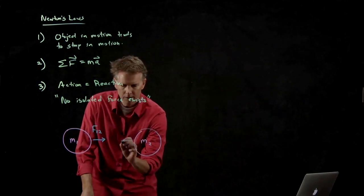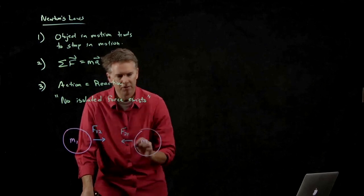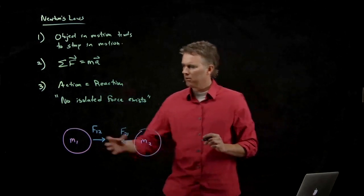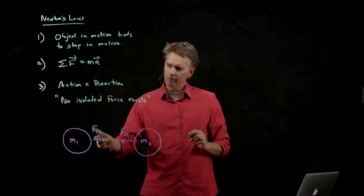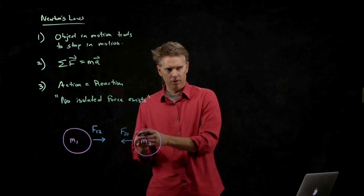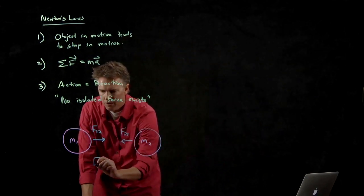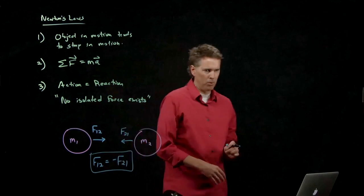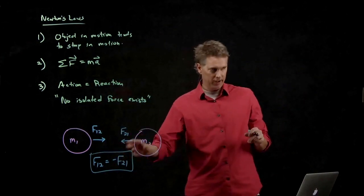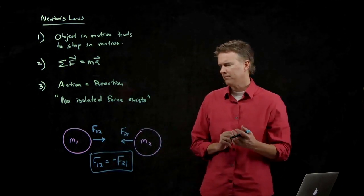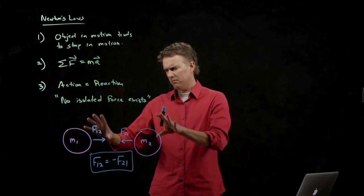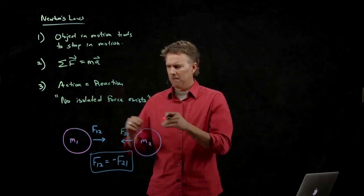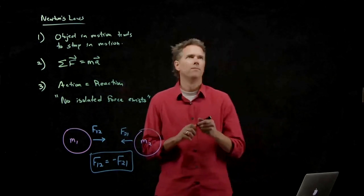But, Newton's third says, you can't just have that one isolated force. There has to be another force, F21, which is the force on two due to one. So, if M1 is getting pulled to the right with a force F12, M2 is getting pulled to the left with a force F21, and Newton's third says this. This is the point of Newton's third law. F12 is minus F21, equal and opposite. That maybe makes sense to you in terms of these planets floating around in outer space. But let's come back down to Earth and talk about something a little more tangible.